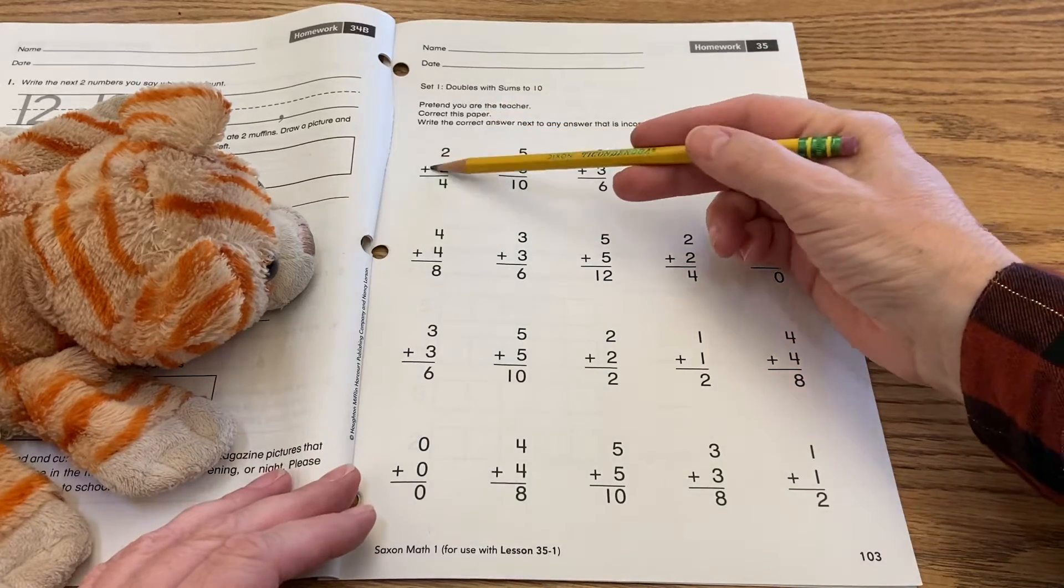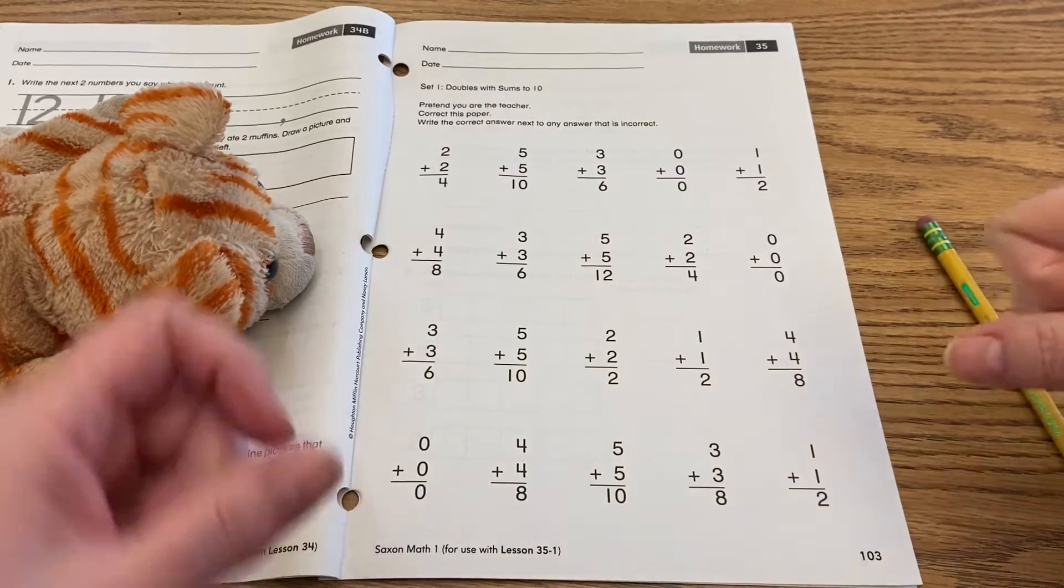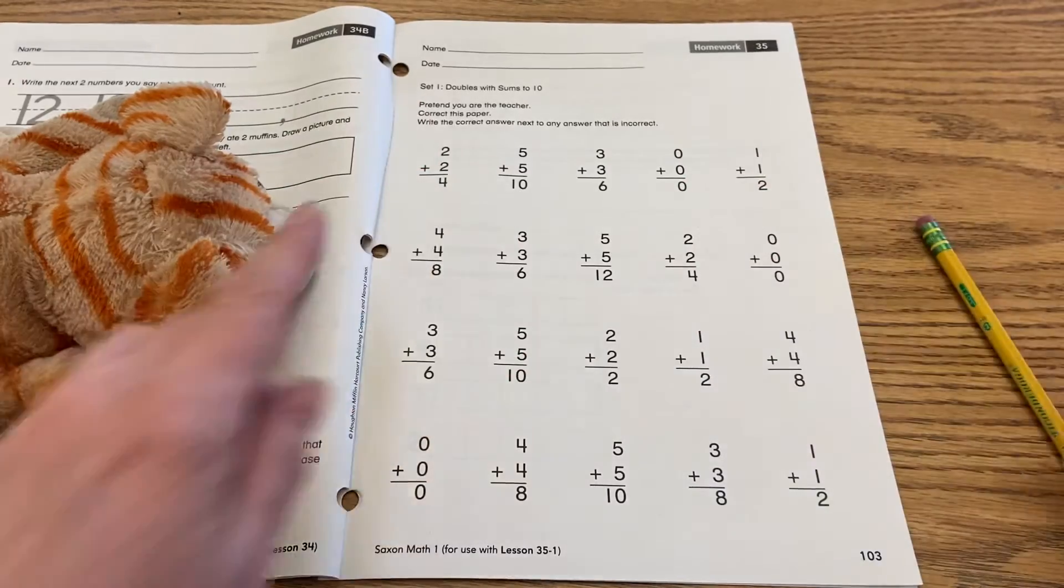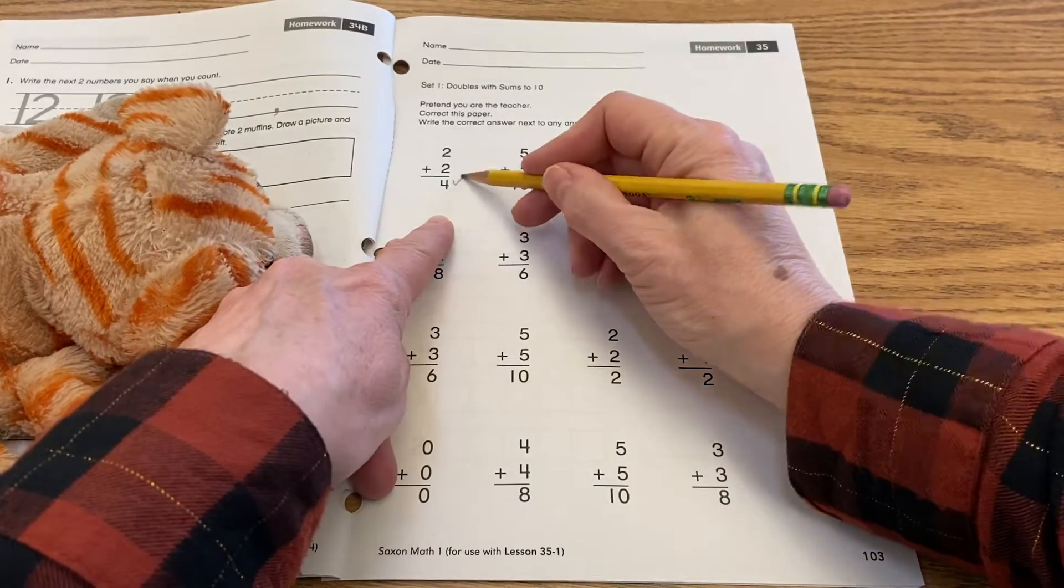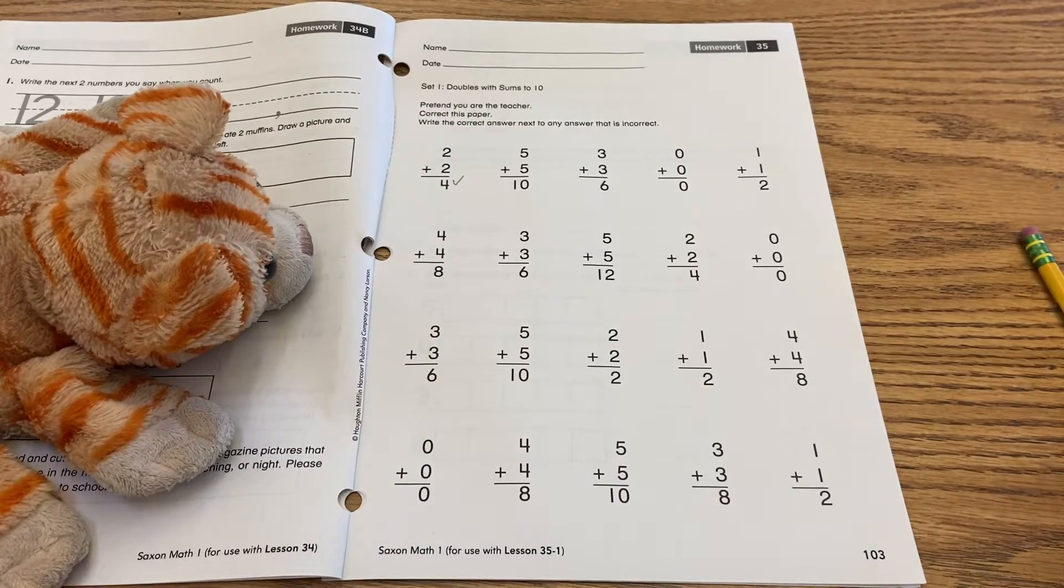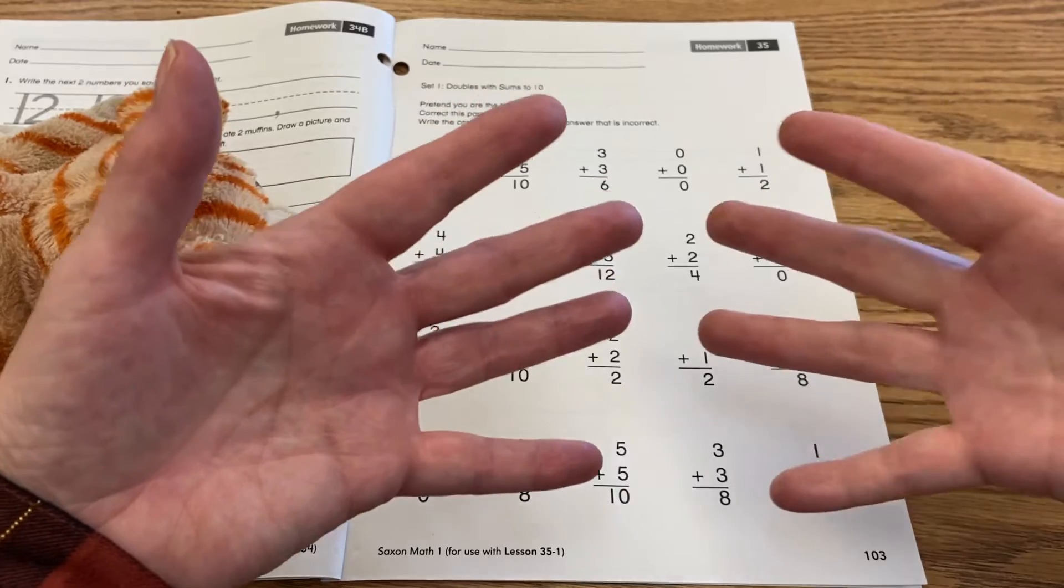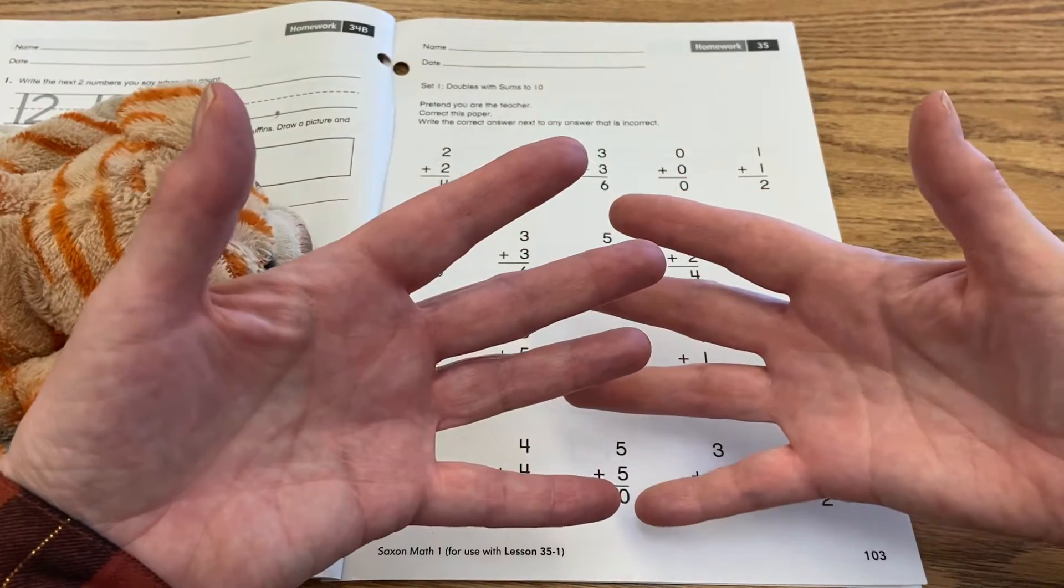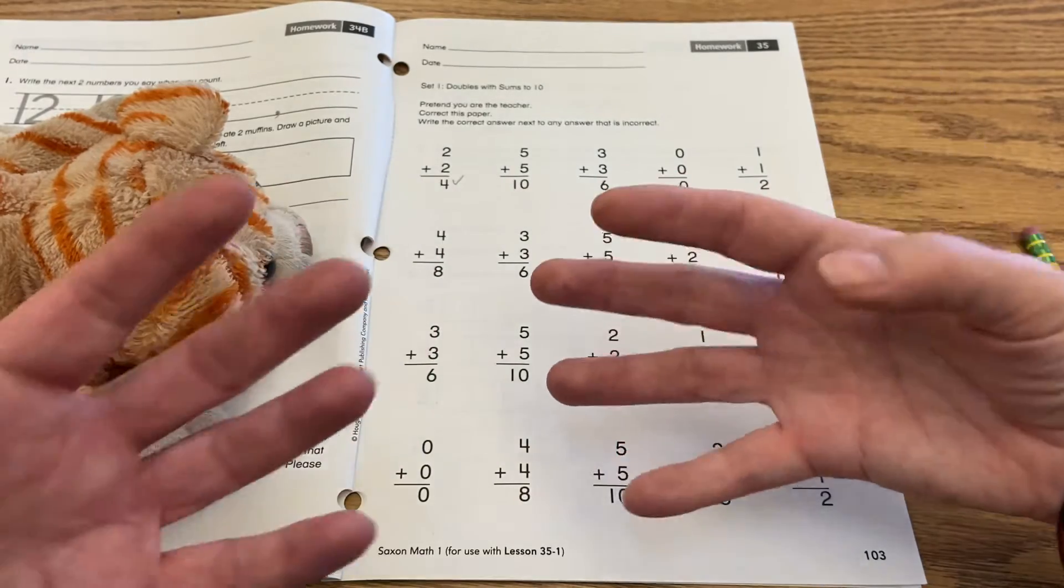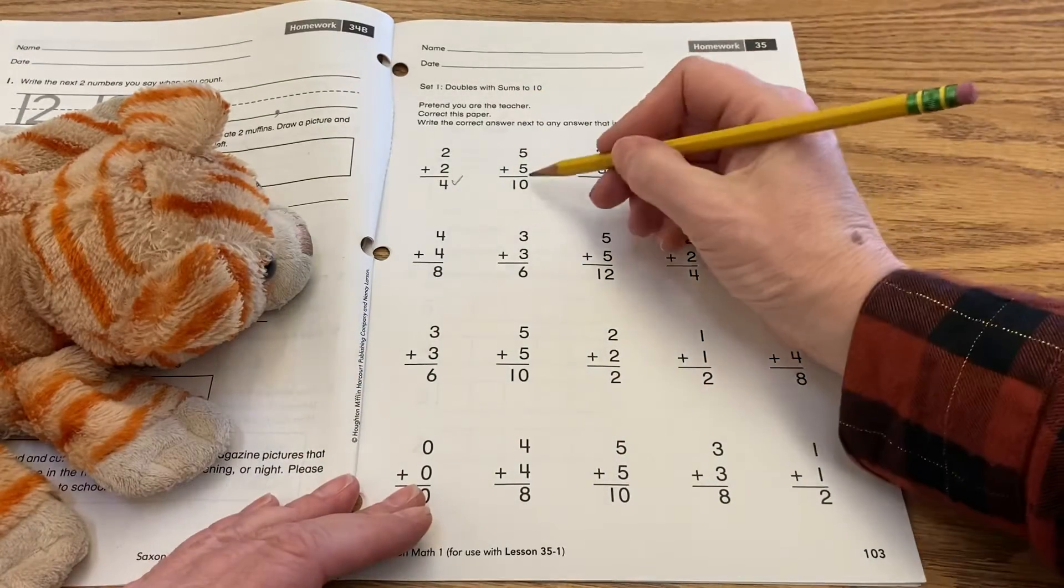So we're going to look here two plus two equals four. Is that correct? Two plus two equals four. Yes, that's correct. So I'm going to put a check by that. Does five plus five equal ten? I'm going to check it. Here's five fingers here, five fingers here. Does five plus five equal ten? One, two, three, four, five, six, seven, eight, nine, ten. Yes, that equals ten, so they get a check here.